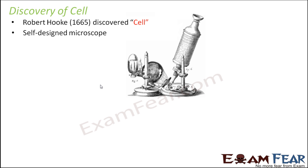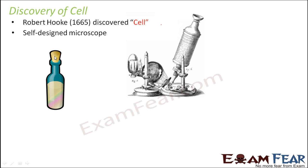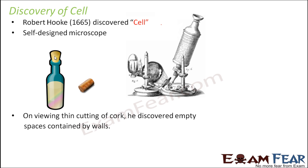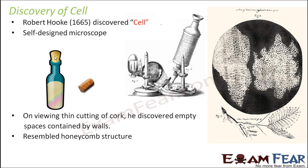This is how the microscope designed by Hooke looked. His experiment was with a cork — the cork of a bottle. The cork was made up of the bark of a tree which was once living but was now dead. Out of his own interest, he observed a variety of objects, and this cork was one of them. What he observed with his microscope were honeycomb-like structures — small spaces with walls around them.